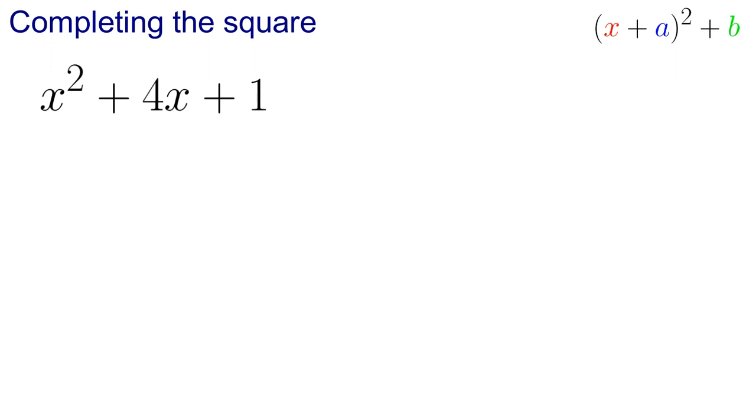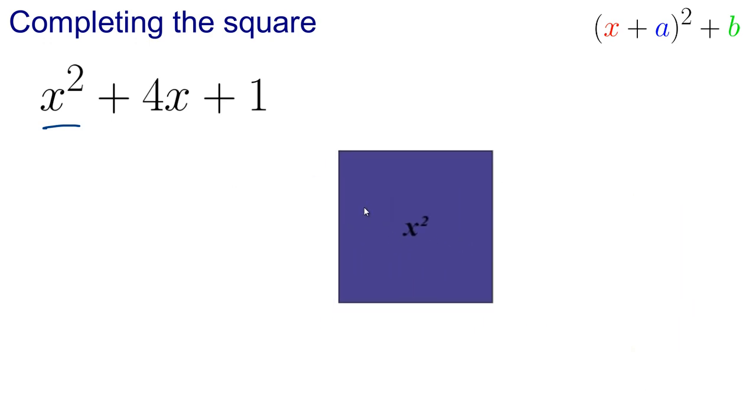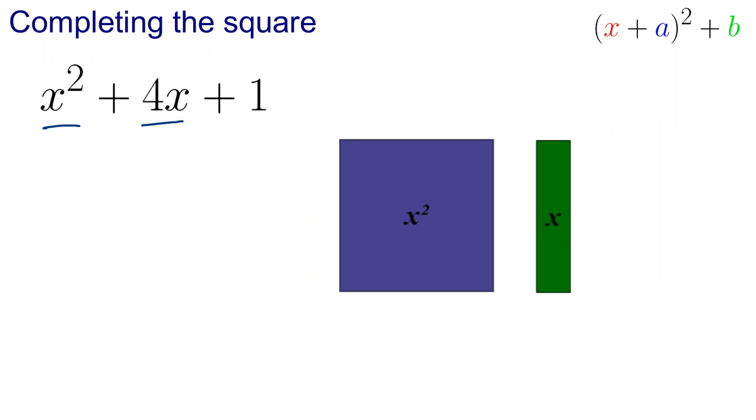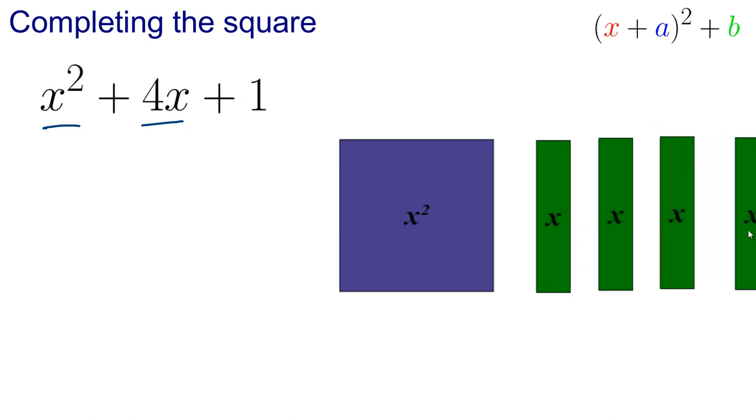So we're going to think about drawing a diagram, making this visual. So what we've got in our expression, we've got an x squared, so we're going to represent that like this, we've got 4x's, so that's 1, 2, 3, 4, and we've got a 1 on the end here, so we'll use a 1.